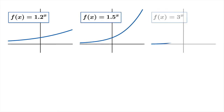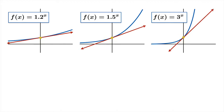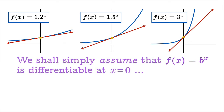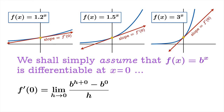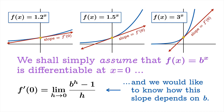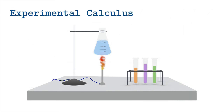We have the tangent slope at the origin problem. Looking at various exponential functions with different bases, it sure looks like a tangent slope exists in each case. So we'll simply assume that exponential functions b to the x are differentiable at the origin, and notice that the slope changes as the base changes. We want to examine this limiting value — how this slope depends on the base b. Next, we'll do a little experimental calculus, using software to poke around with exponential functions and try to figure out what's going on.